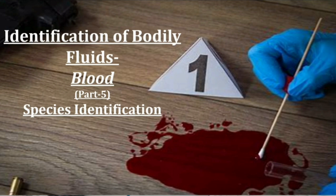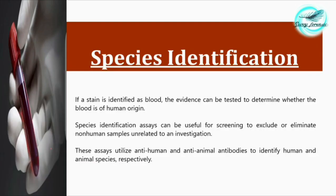Up till now, what we have done is we have preliminarily identified the stain as blood, then confirmed that the particular stain is blood. Now what we have to do is identify whether that particular blood or biological fluid is of human origin or of any other animal origin. We can do this with the help of species identification techniques.